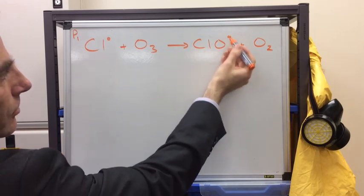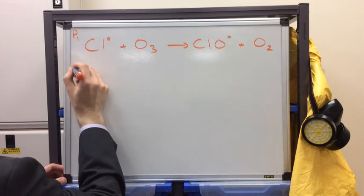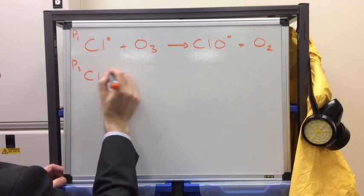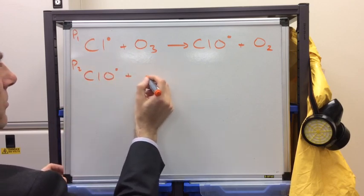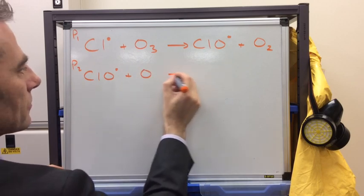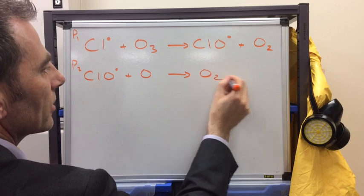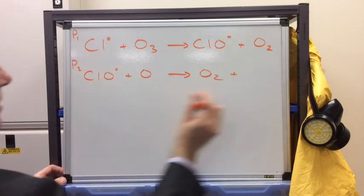The radical, this new radical that's been formed, feeds into P2, propagation 2. So, this is the ClO radical, and that's going to react with an oxygen atom. They will combine and form an oxygen molecule, and what's left, a Cl radical.